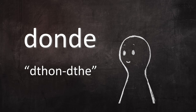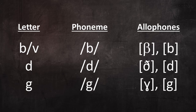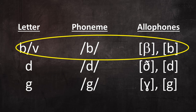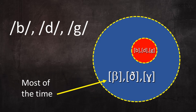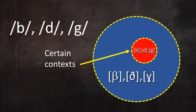So what was wrong with that YouTuber's explanation? The answer is an idea that doesn't just relate to Spanish D, but also B, V, and G. In standard Spanish, the phonemes B, D, and G are pronounced as very soft fricatives and approximants most of the time. They're only pronounced as stops in certain phonetic contexts.